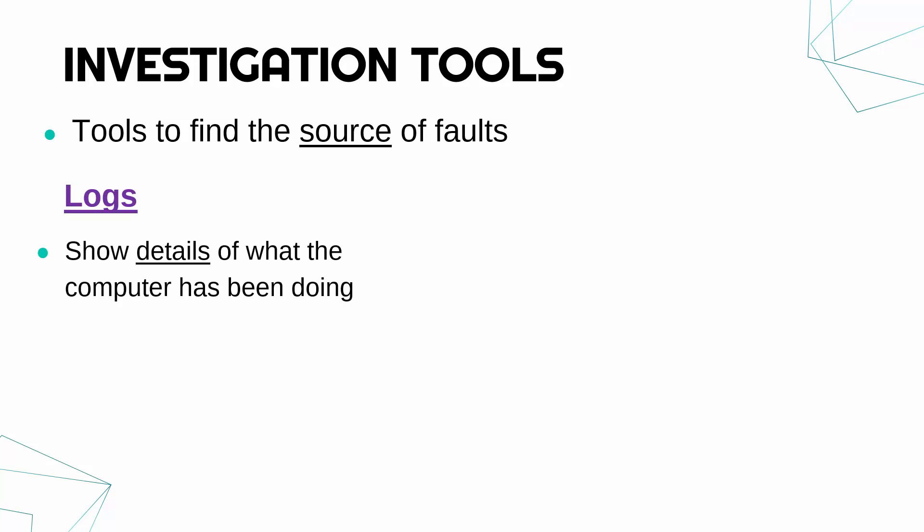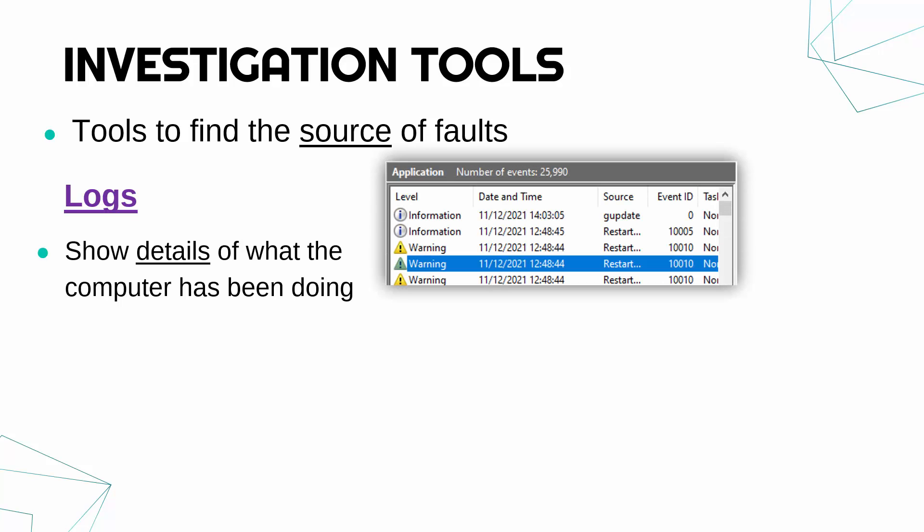An example of investigation tools are logs. A log shows some details of what the computer has been doing and keeps track of what is going on. The idea is you can look back at the log to see when issues occurred and what the issue was. Here is something called Event Viewer, which is built into Windows — there are similar versions in other operating systems. It shows every single issue the operating system encounters. Most are really minor, but the idea is you can go in and see what was going on to pinpoint when the issue started occurring.